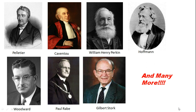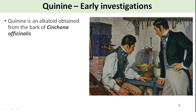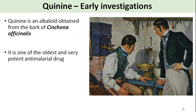Some of them isolated the molecule, some worked really hard to determine the two-dimensional and three-dimensional structure, and some contributed to the synthesis of the quinine molecule. Let's see one by one. Quinine is an alkaloid obtained from cinchona bark and is one of the oldest and very potent anti-malarial agents.